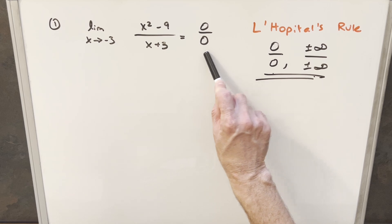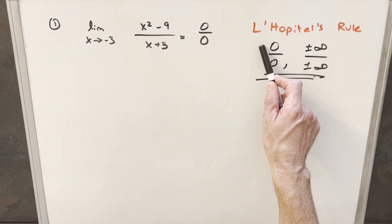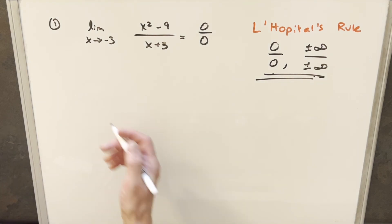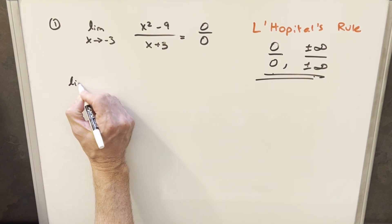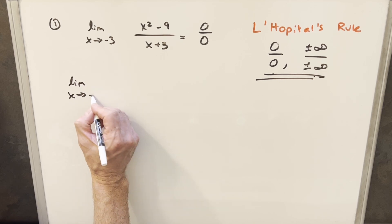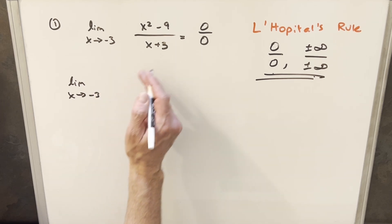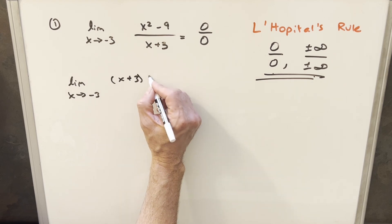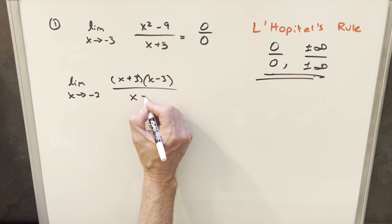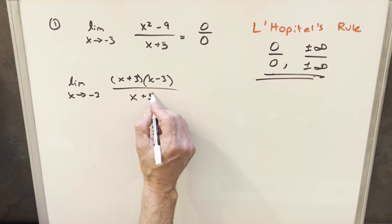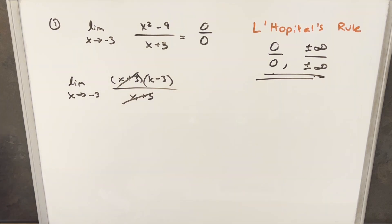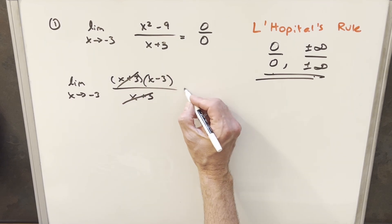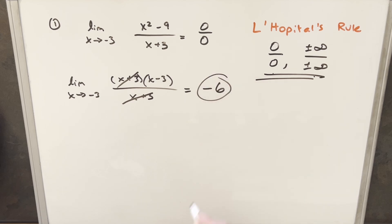Now that we've determined this is an indeterminate form, we could use L'Hôpital's Rule, but first let's do it a different way — by factoring. We can factor the numerator as x plus 3 times x minus 3. Then the x plus 3 terms cancel, and we can just plug minus 3 in: minus 3 times minus 3 gives us our limit of minus 6.